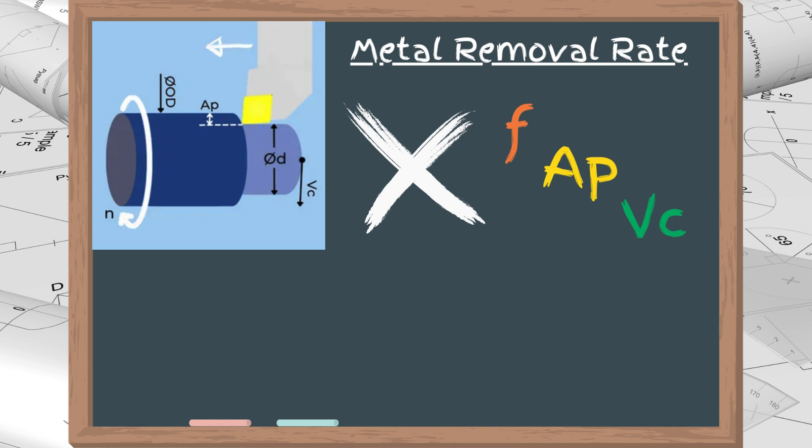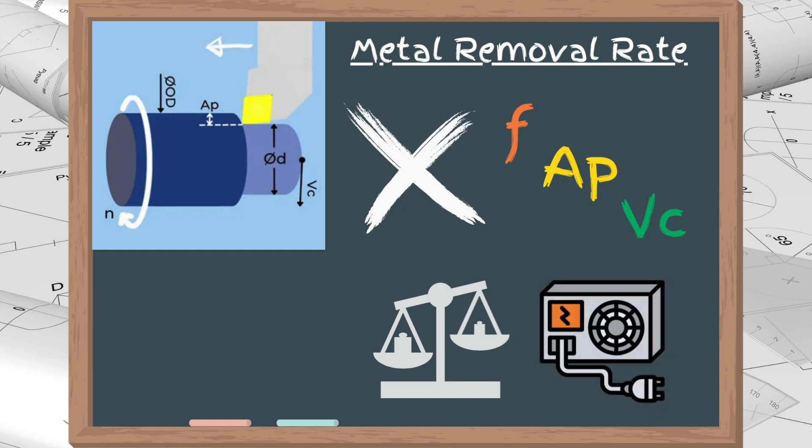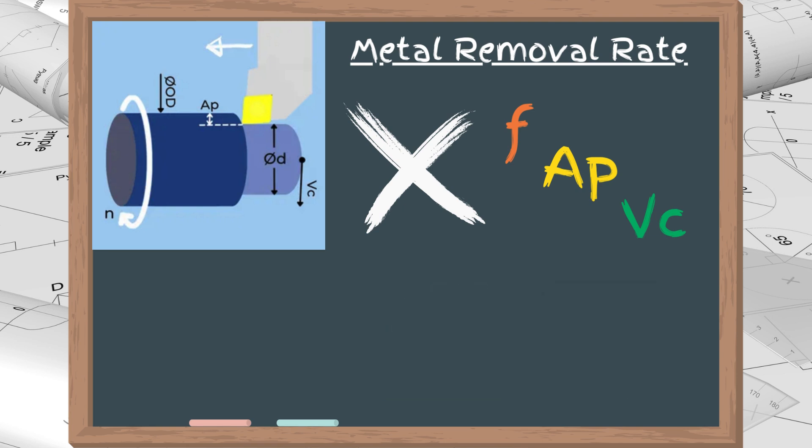It is used for two purposes: comparing the productivity between two scenarios, and for calculating the required machining power. The formula for metric units is Vc times F times AP. In imperial units the same is multiplied by 12.